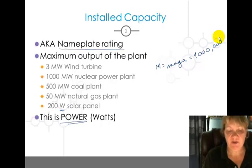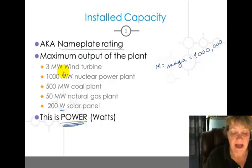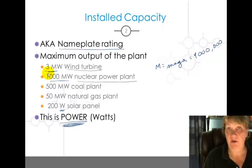All of this we're talking about is power, not energy. So the maximum power out of a wind turbine is three megawatts. The maximum power out of a nuclear plant is a thousand and on and on. So how do we get to energy? That's a good question. That's the next question.